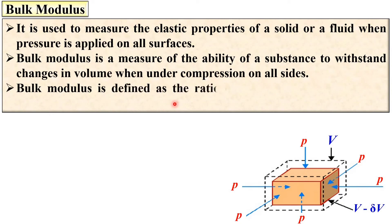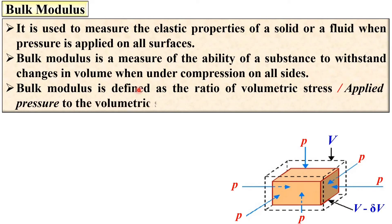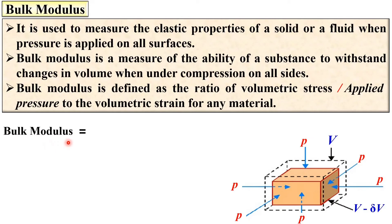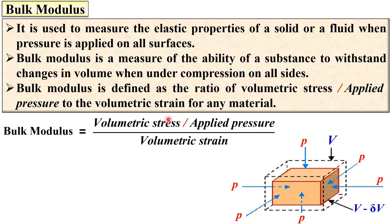Bulk modulus is defined as the ratio of volumetric stress — sometimes called applied pressure — to the volumetric strain of any material. Simply put, bulk modulus is the ratio of volumetric stress to volumetric strain.